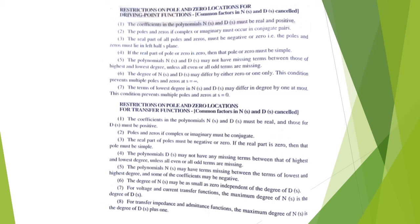The necessary conditions for the driving point function concern restrictions on poles and zero locations. The coefficients in polynomials N(s) and D(s) must be real and positive. Poles and zeros, if complex or imaginary, must occur in conjugate pairs. The real part of all poles and zeros must be negative or zero — they must lie in the left half of the s-plane. If the real part is zero, that pole or zero must be simple. N(s) and D(s) may not have missing terms between highest and lowest degree unless all even or all odd terms are missing. The degree of N(s) and D(s) may differ by zero or one only, preventing multiple poles/zeros at s = ∞. The lowest-degree terms of N(s) and D(s) may differ in degree by at most one, preventing multiple poles/zeros at s = 0.